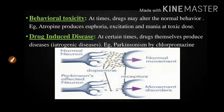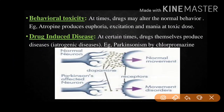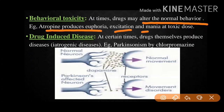Behavioral toxicity: at certain times drugs may alter normal behavior. The example here is atropine, which produces euphoria, excitation, and mania at toxic doses. When the atropine level is increased to a toxic dose, the drug shows extreme happiness, excitation, and mania. This extreme happiness and excitement is also not a good state, so this is behavioral toxicity.